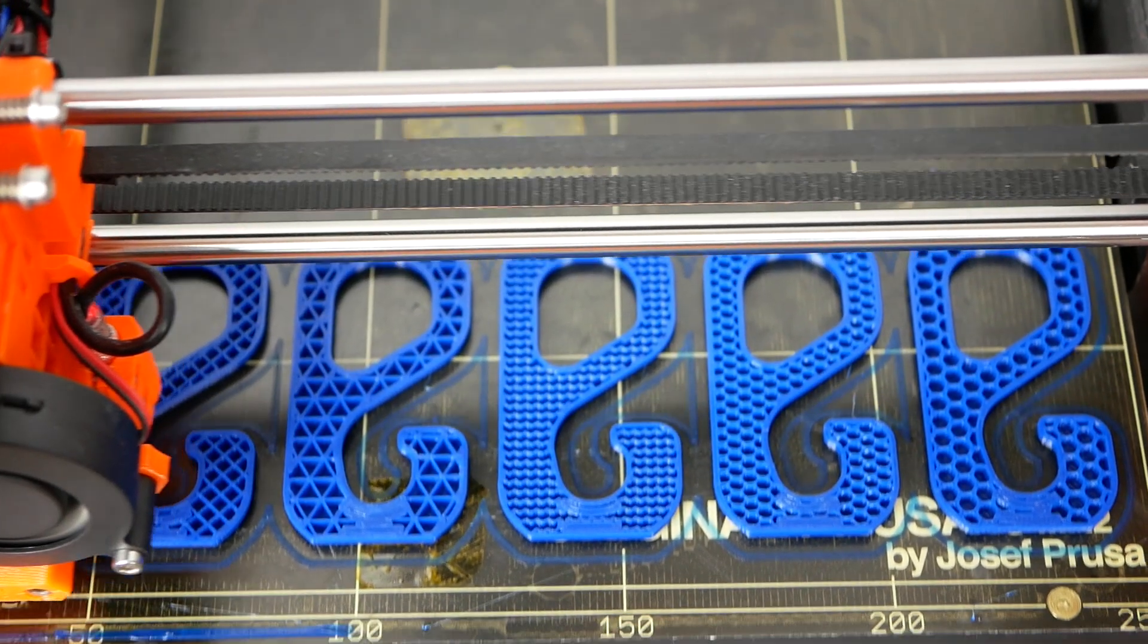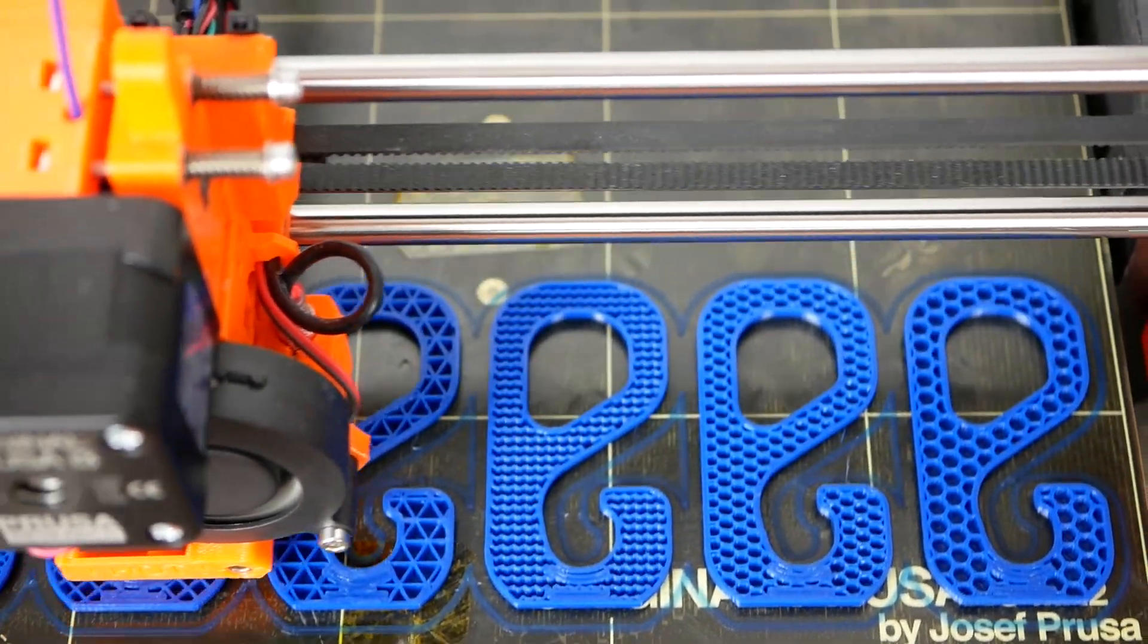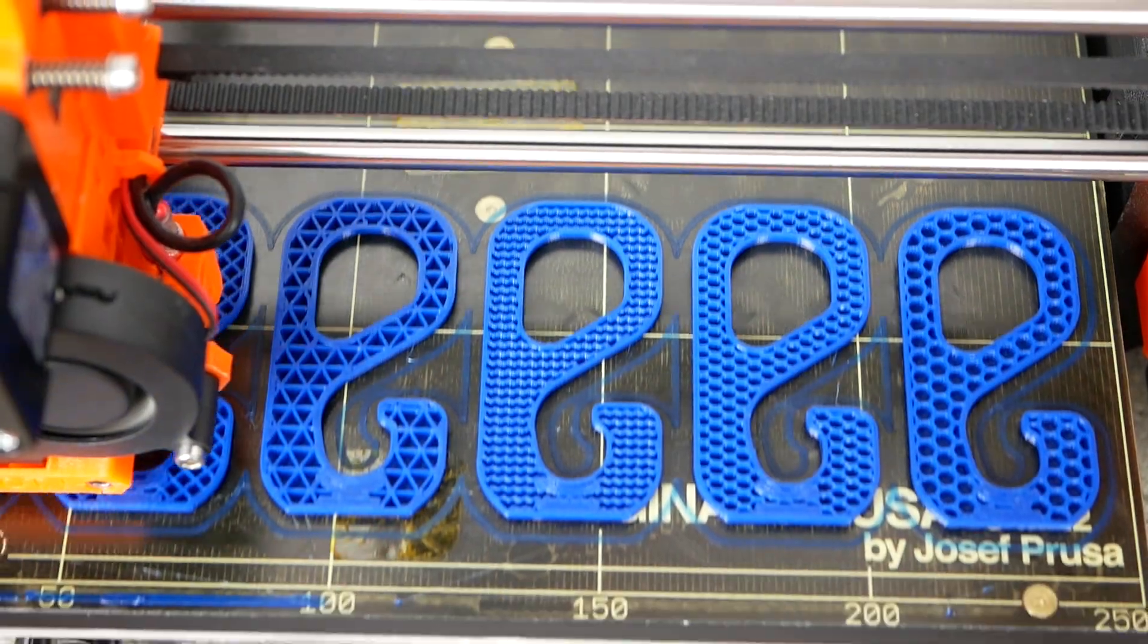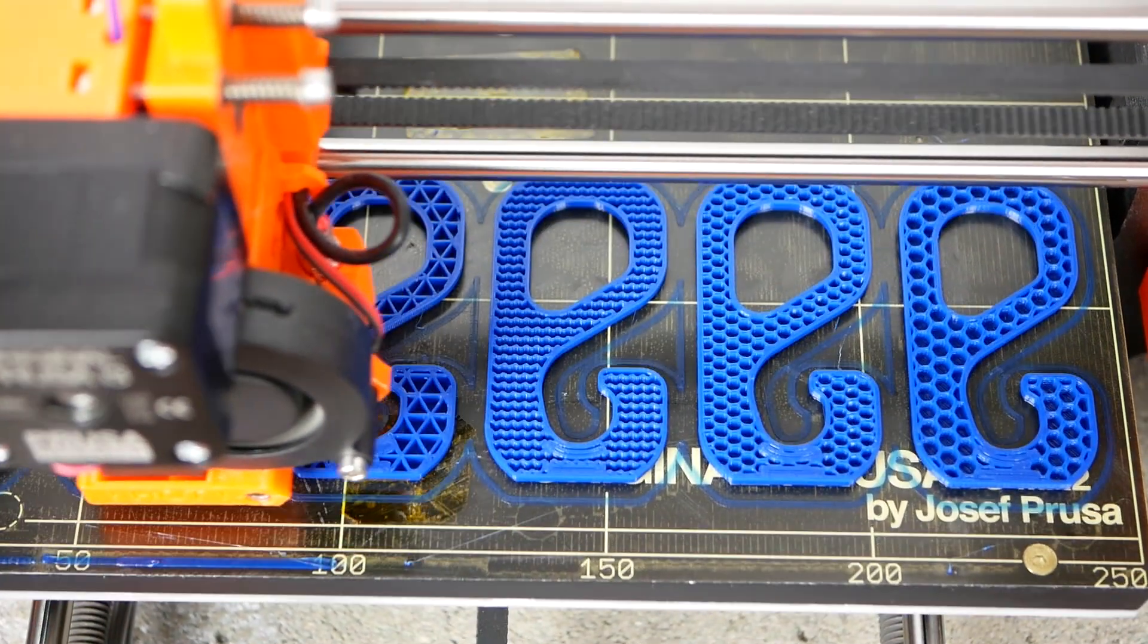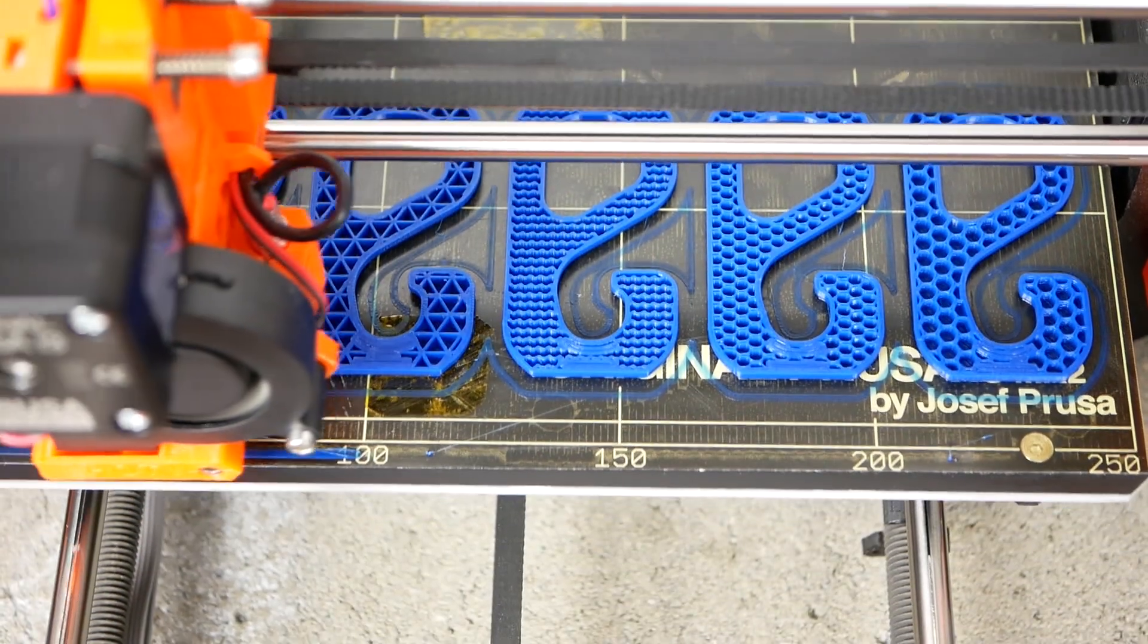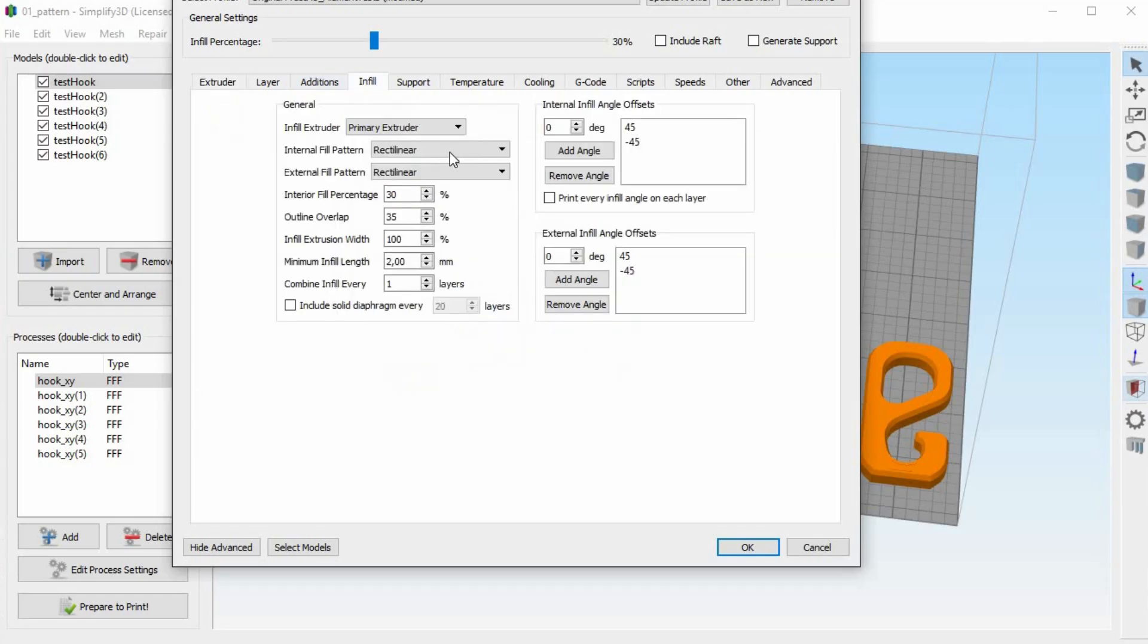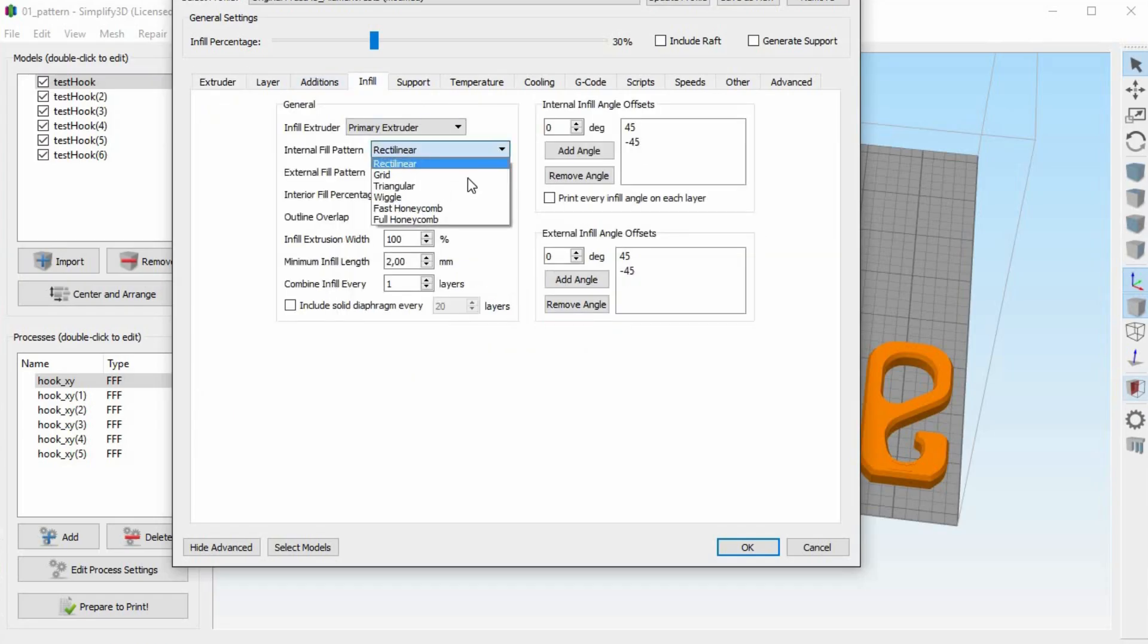As a first investigation I wanted to find out what difference the infill patterns make on the strength of the part and print time. I also wanted to find out if 30% infill really meant that 30% of the internal volume was filled by material.